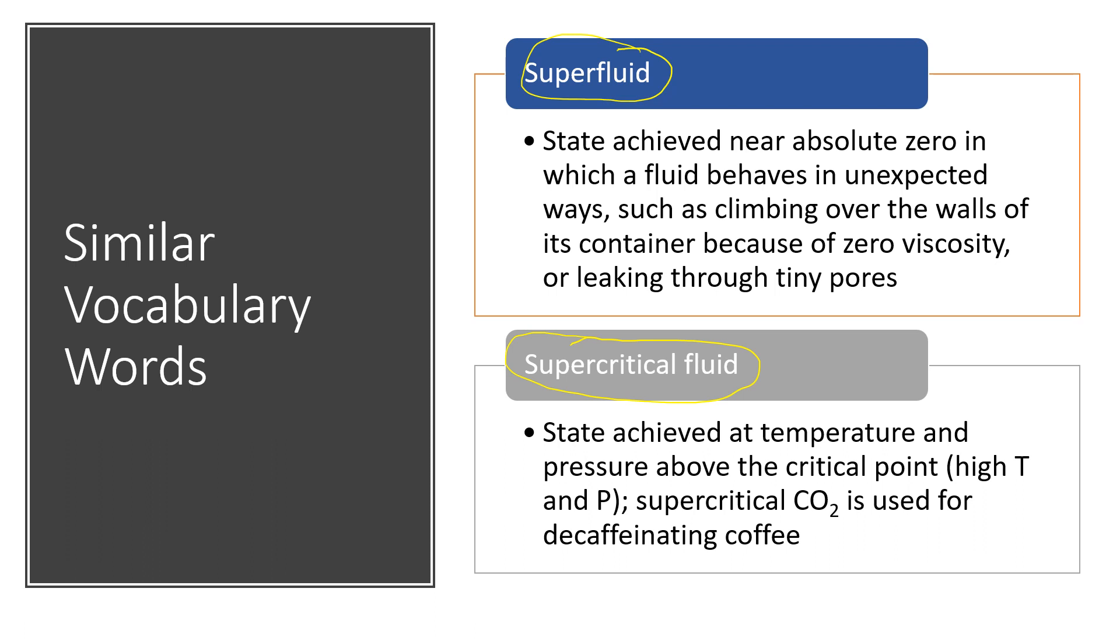A superfluid is a state that's achieved near absolute zero, in which a fluid behaves in unexpected ways, such as climbing over the walls of its container because of zero viscosity, or leaking through tiny pores. A supercritical fluid is something that's achieved at temperature and pressure above the critical point on the PT phase diagram. Supercritical CO₂ is used for decaffeinating coffee.